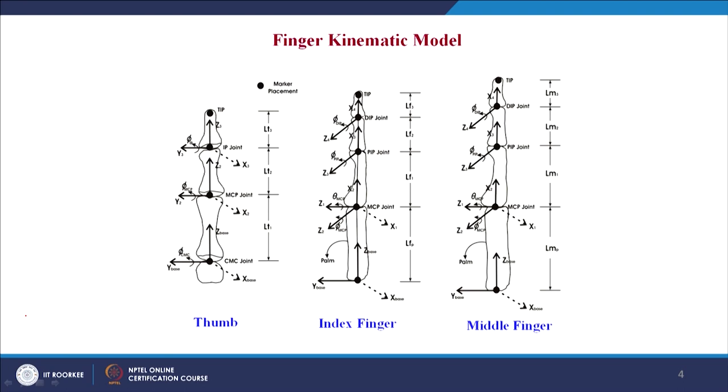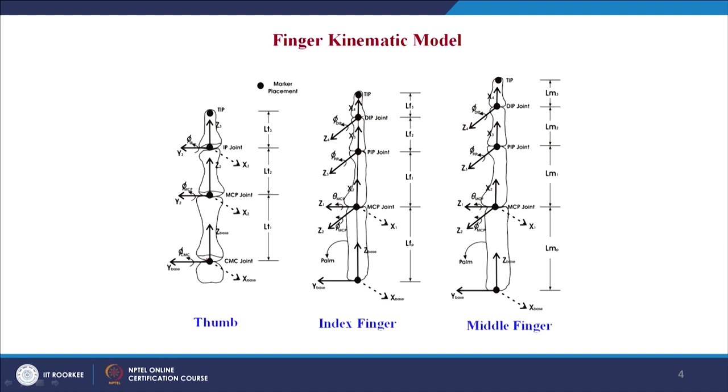Coming to the first part which is the finger kinematic model for these three digits: thumb, index and middle fingers. The thumb is modeled kinematically with three degrees of freedom in order to perform the flexion-extension movement, where the degrees of freedom are considered for the CMC flexion-extension, MCP flexion-extension, and the IP joint — one degree of freedom each.